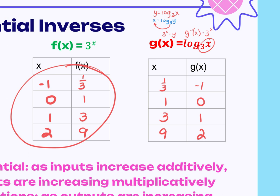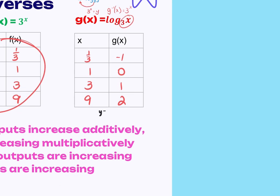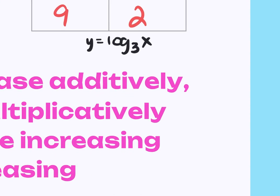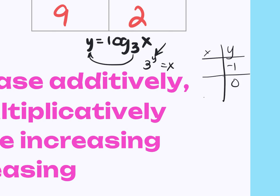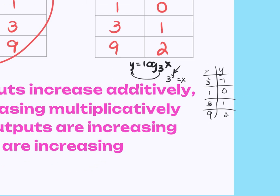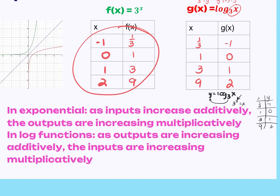The second option — and for more complicated logs I think this is actually easier — is to take the log function y = log base 3 of x, convert it to exponential form: 3^y = x, and then plug in for y instead of x. Using y-values of −1, 0, 1, 2: 3^(−1) = 1/3, 3^0 = 1, 3^1 = 3, 3^2 = 9. Two different ways to graph.